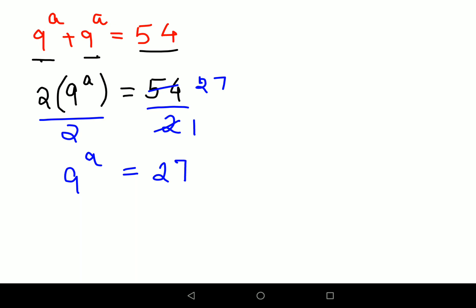See now you have an option of taking logs but here if you see 9 is nothing but 3 squared the whole raised to a and 27 can be written as 3 cubed.